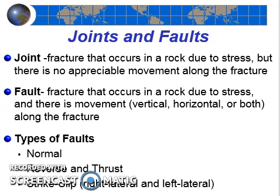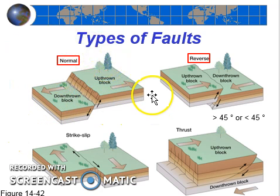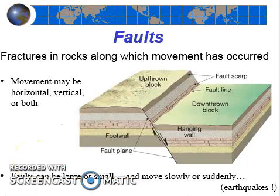Note that there are two subtypes of strike-slip faults: right-lateral and left-lateral strike-slip faults. Movement along faults can be horizontal, vertical, or both. We're going to see that different types of faults have different types of movements generally associated with them, but there are always exceptions.